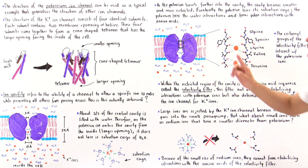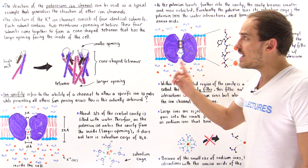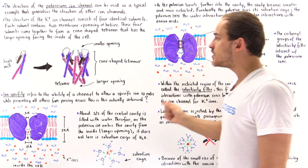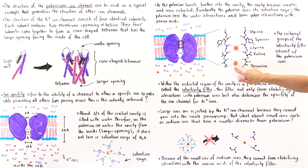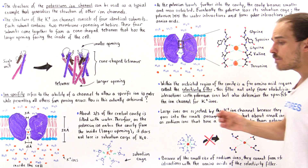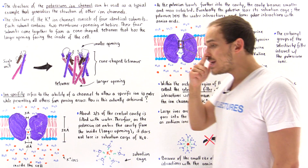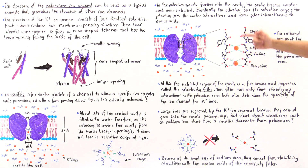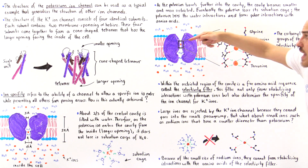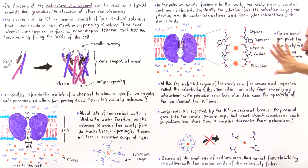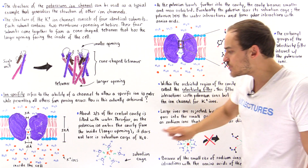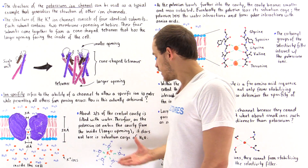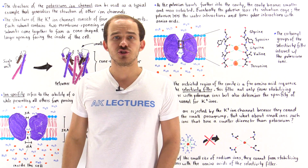Only potassium ions can actually move across the potassium ion channel, because only potassium has the proper ionic radius to ensure that the interactions formed within the selectivity filter region are more stable than the interactions between the potassium ions and the water molecules of the solvation cage.